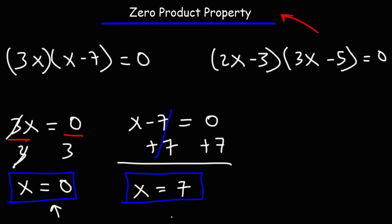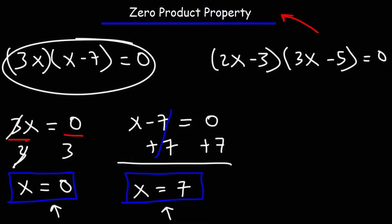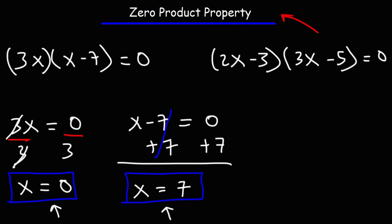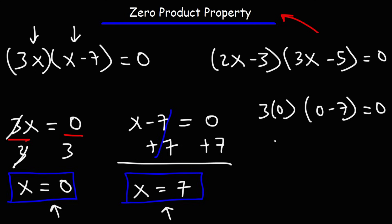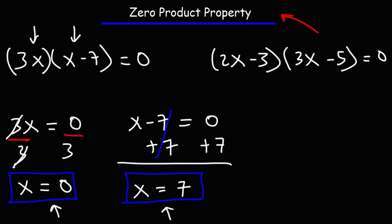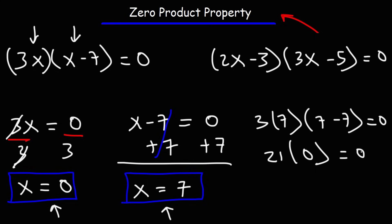If we plug in zero or seven into the original equation, both work. Plugging in zero: we have 3 times 0 times (0 minus 7) — 3 times 0 is 0, 0 minus 7 is negative 7, and 0 times negative 7 is 0. Plugging in seven: 3 times 7 times (7 minus 7) — 3 times 7 is 21, 7 minus 7 is 0, and 21 times 0 is 0. So using the zero product property we can solve for X whenever the equation is in factored form.